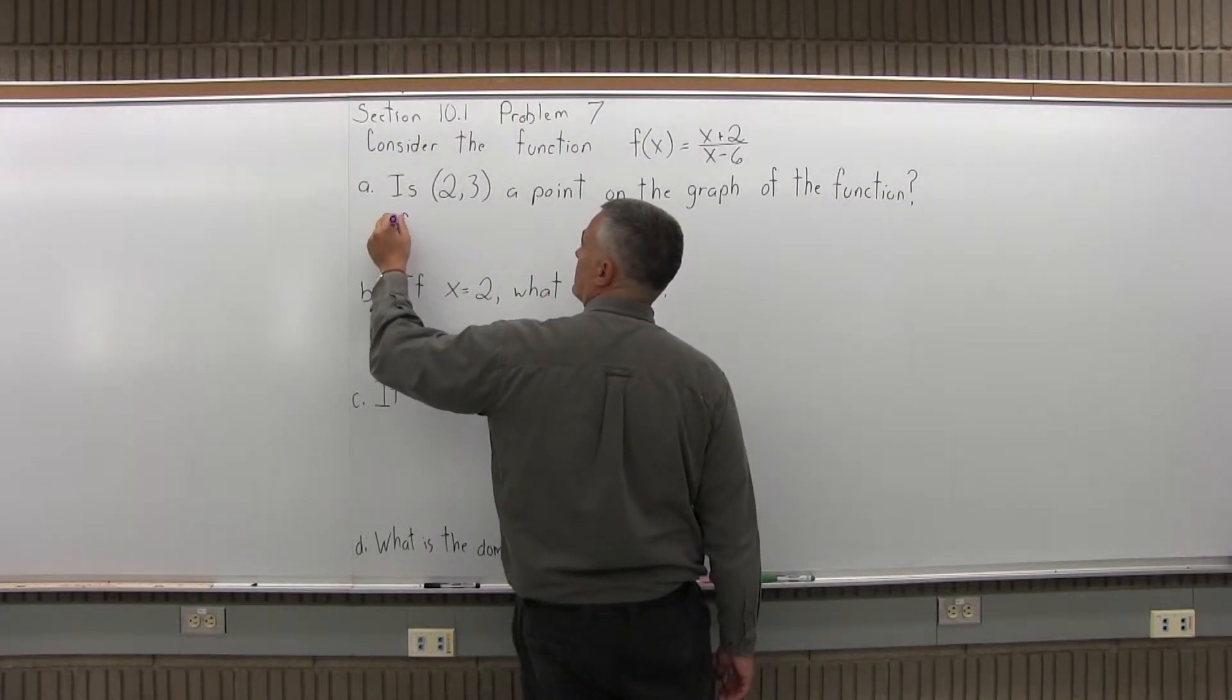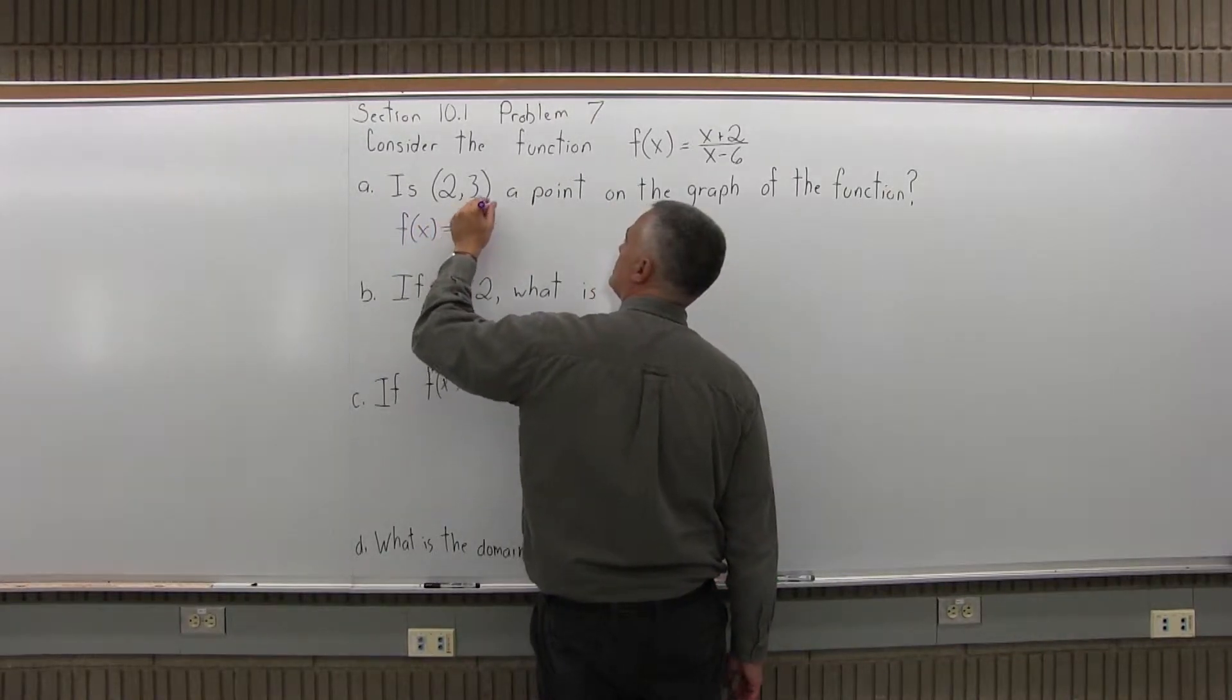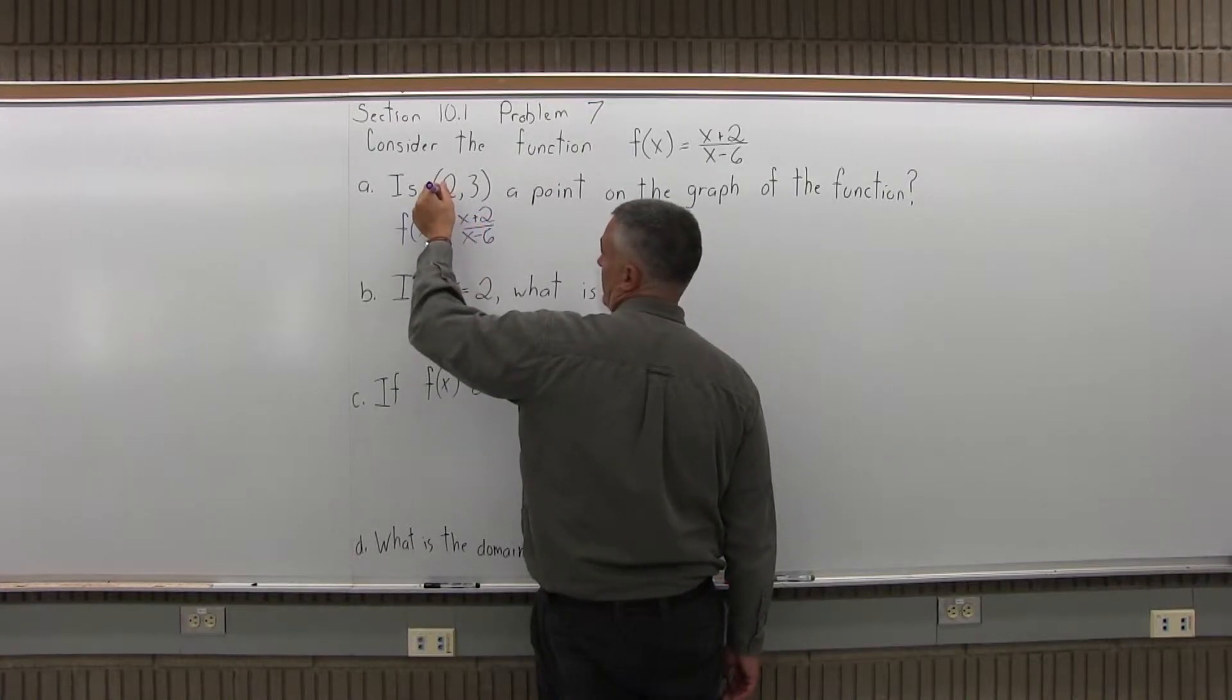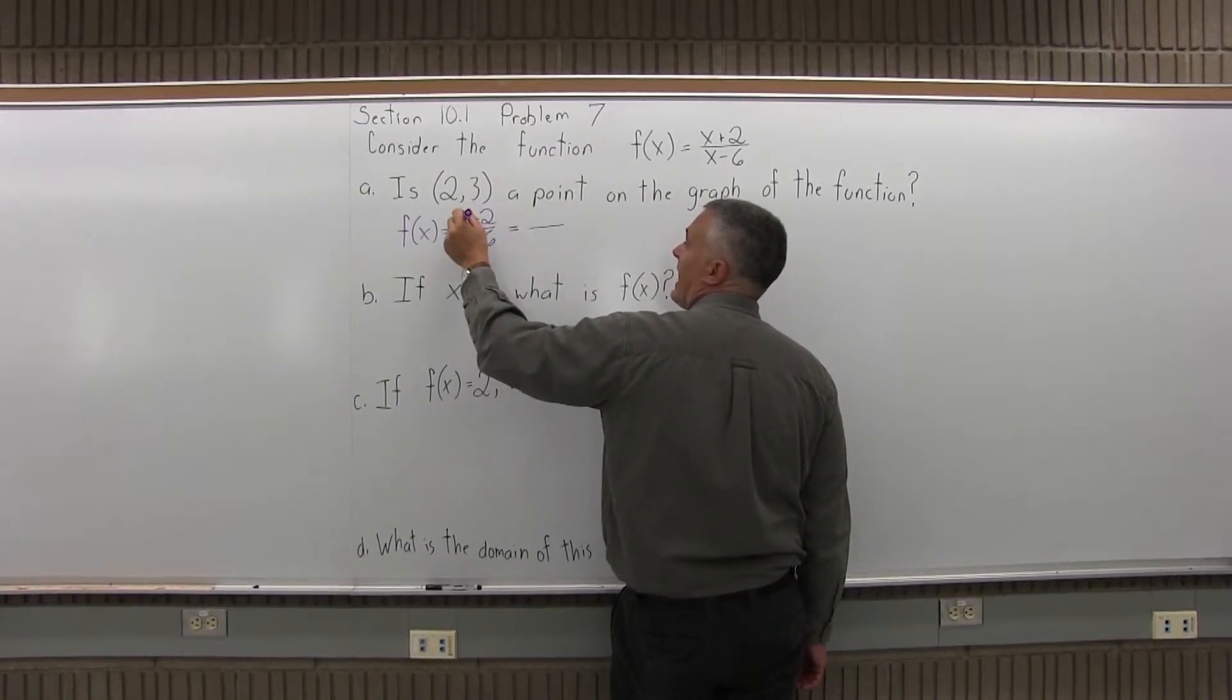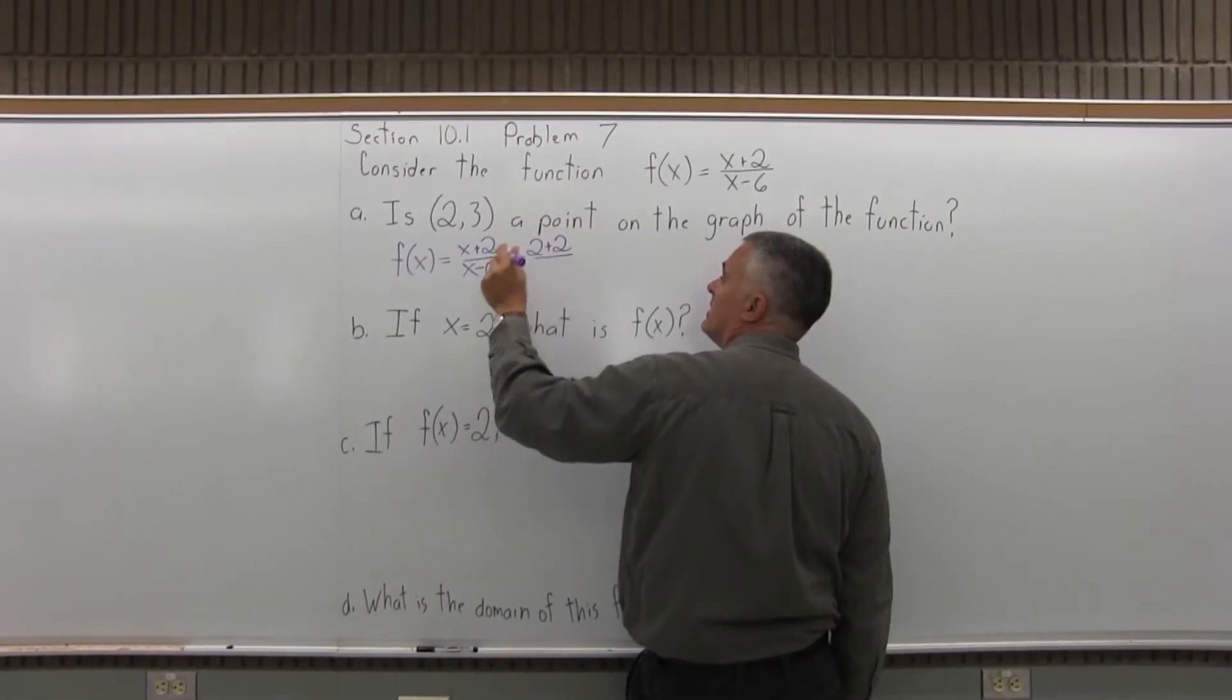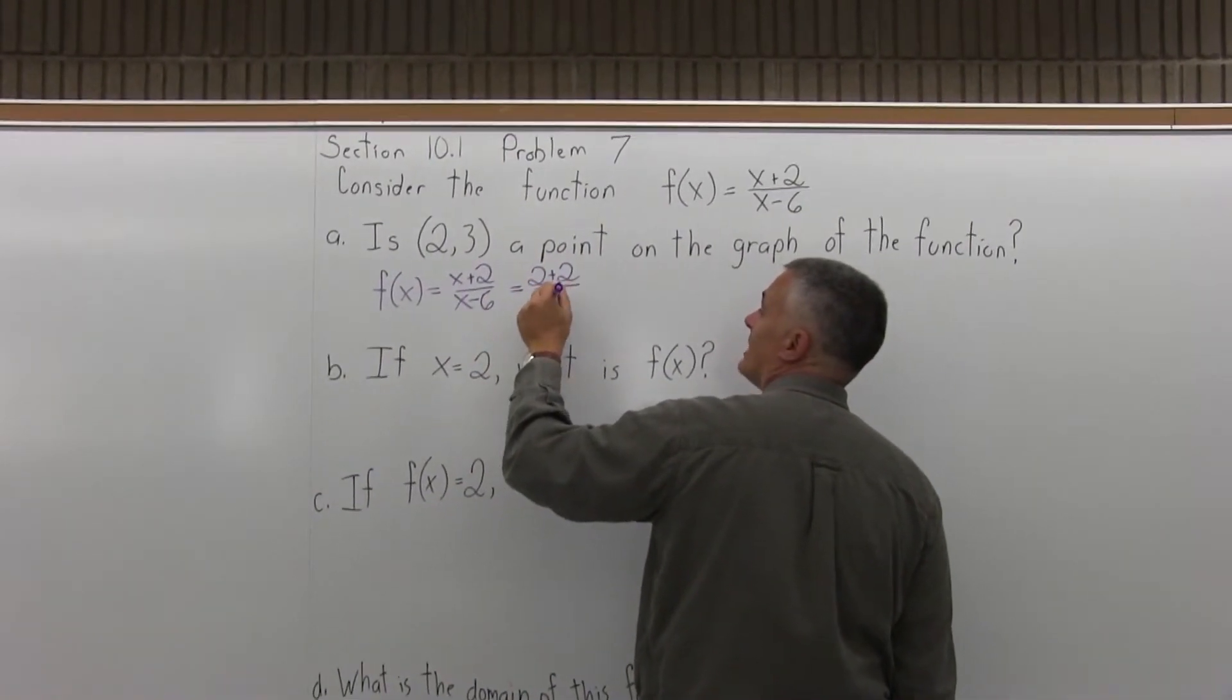Take the function that's given, which is f(x) equals x plus 2 over x minus 6, and put in a value of 2 for x. So the x plus 2 on top would become 2 plus 2, the x minus 6 underneath would be 2 minus 6.